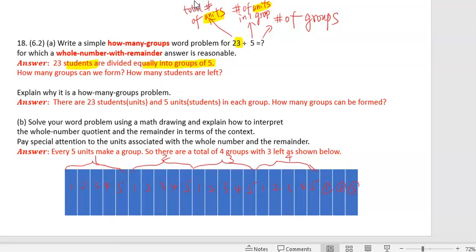So now, because the number five doesn't go into 23, the answer must have a remainder. So how many students are left? And explain why this is a how many groups problem.